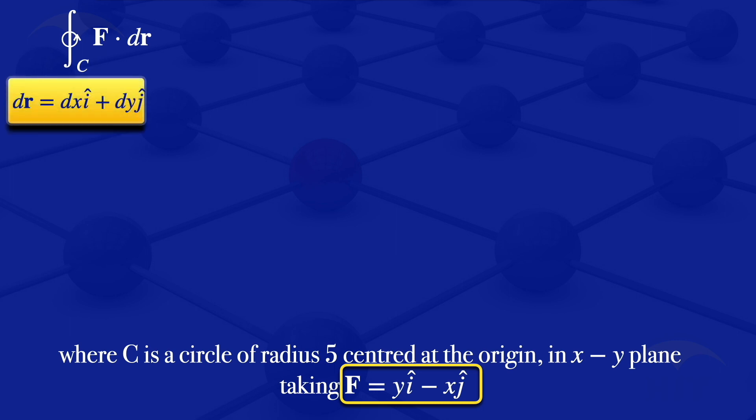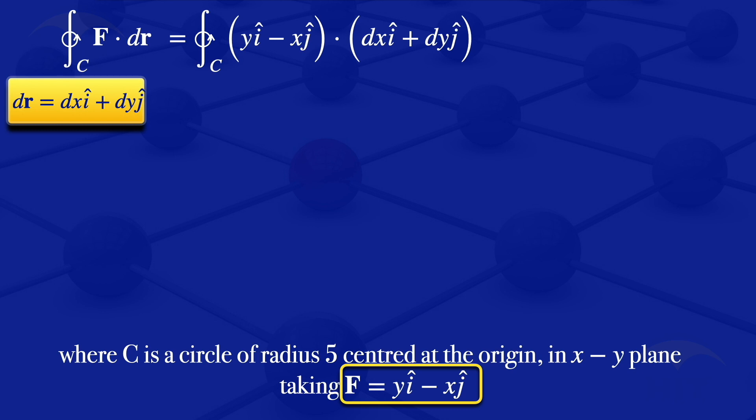And dr is equal to dx·i plus dy·j. Substituting those into the integral, we have the integral along the closed curve C in the positive direction of (yi minus xj) dot (dx·i plus dy·j). We need to take the dot product, multiplying the corresponding elements — those with the i, then those with the j.